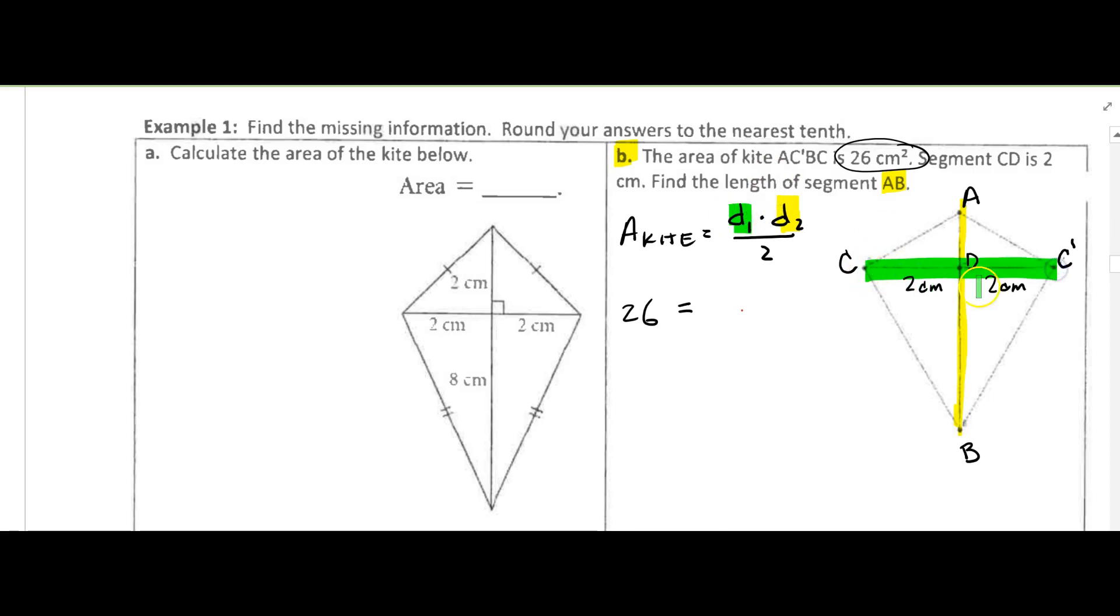The first diagonal here is 2 plus 2 which is 4, so 4 times D2 divided by 2. And I can reduce this, 4 divided by 2 is 2.